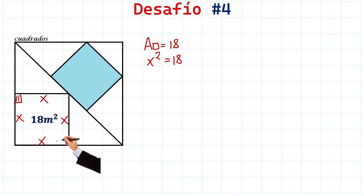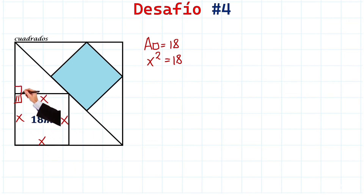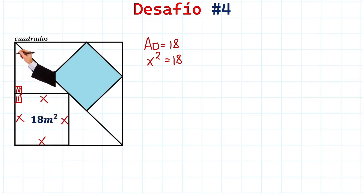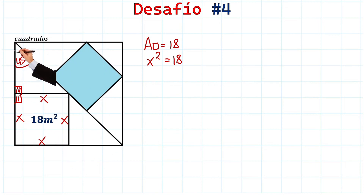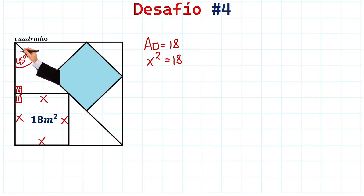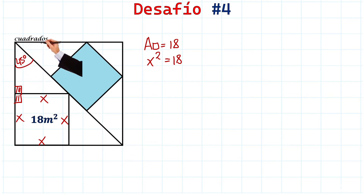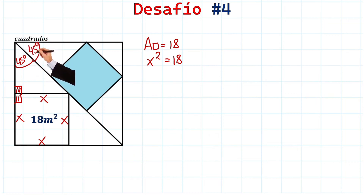Now let's label some angles. We know there is 90 degrees here because it's the angle of this square, and since this is a straight angle, this also has to be 90 degrees. Here we're going to have 45 degrees — because this diagonal divides the 90-degree angle into two 45-degree angles.